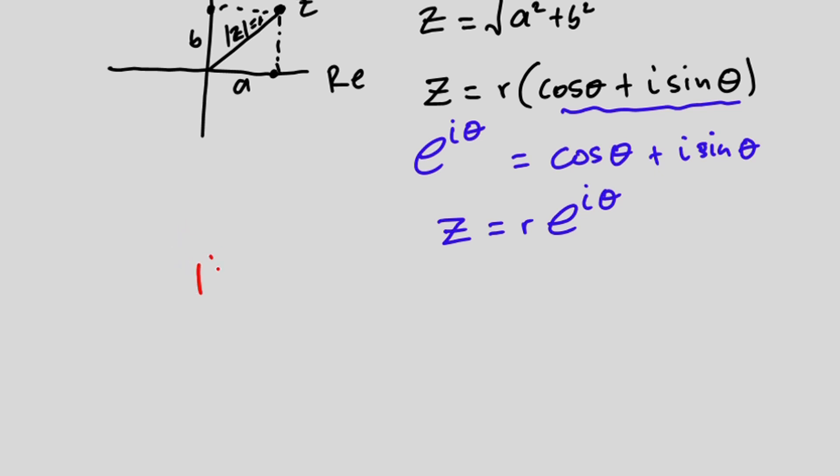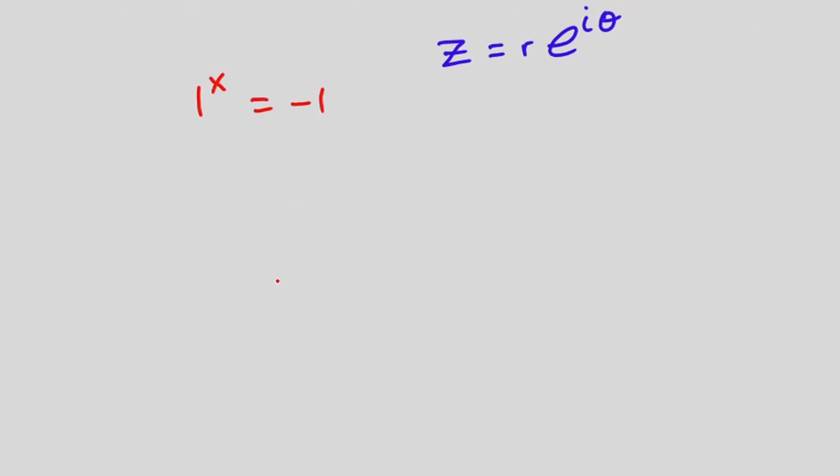Now the question is one to the power x is equal to negative one. If we represent this on a graph, if you are considering unit circle then we're going to get this point to be one then this point is going to be negative one. At this point we have theta to be equal to zero degrees, in radian it is still zero.